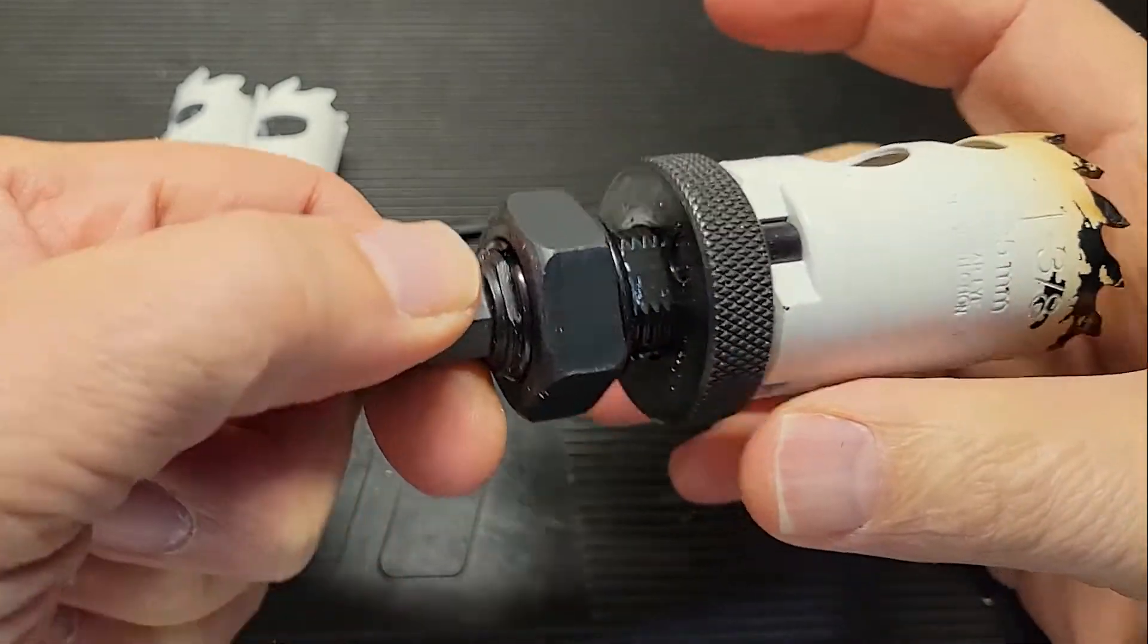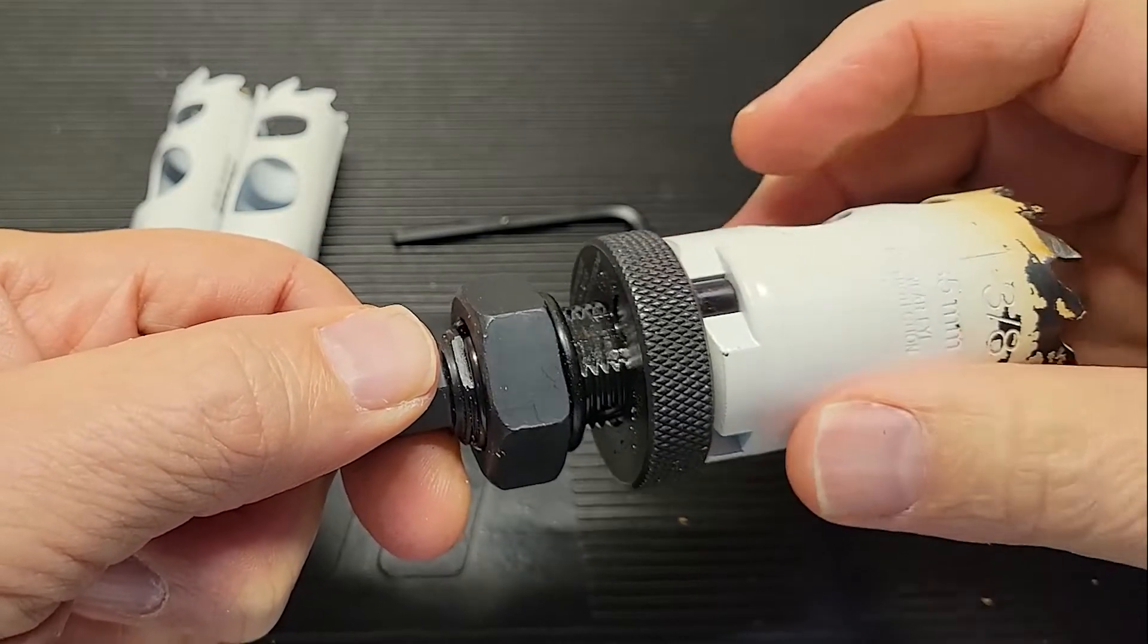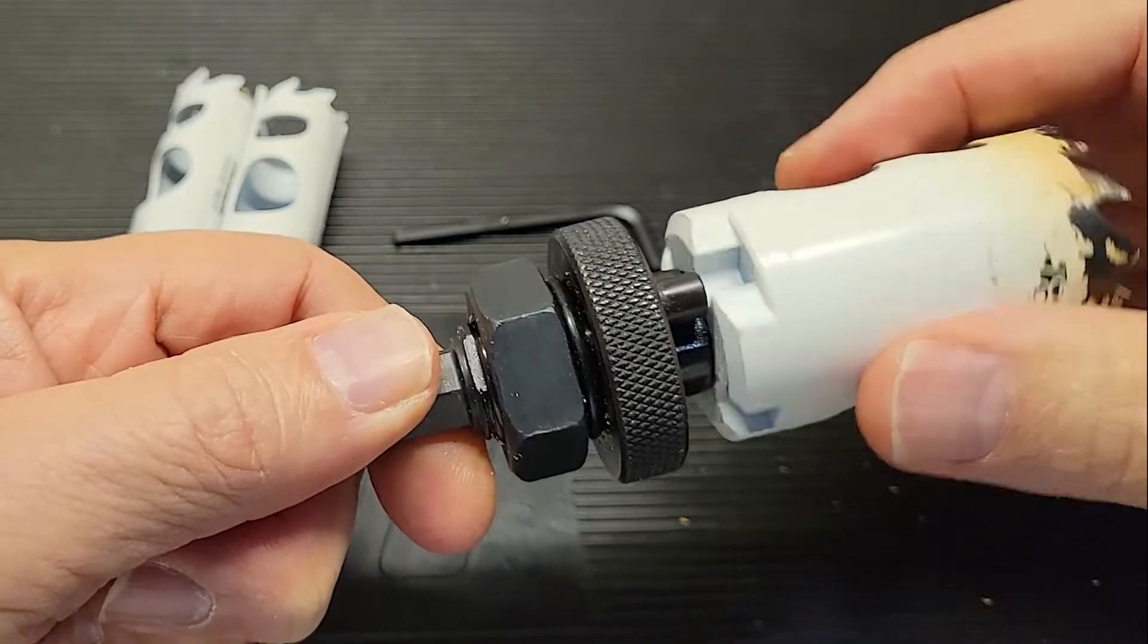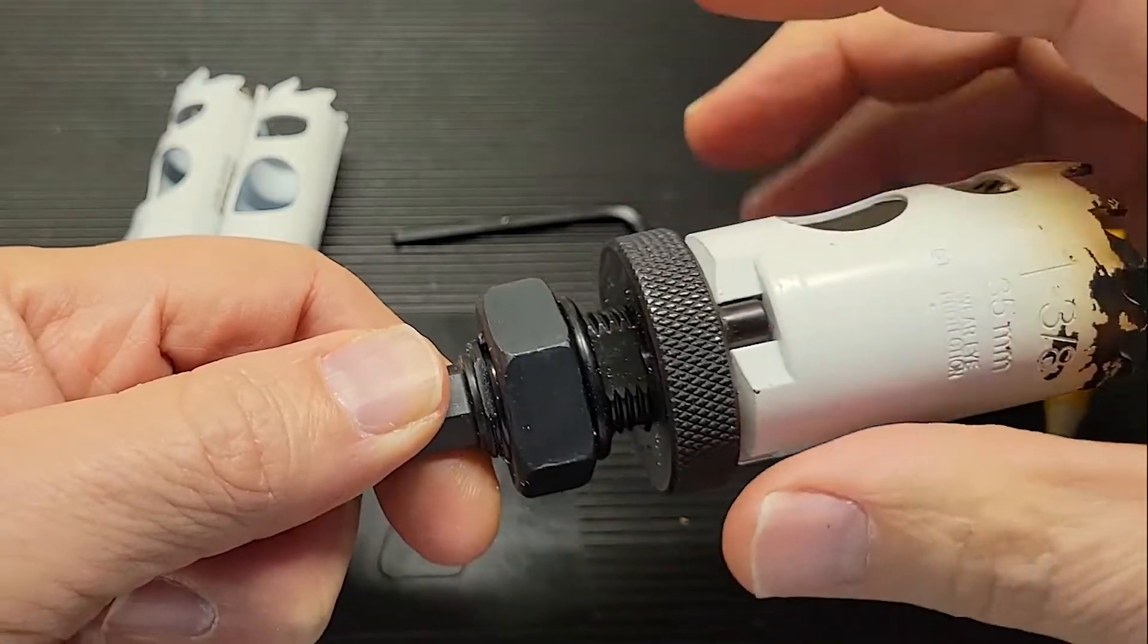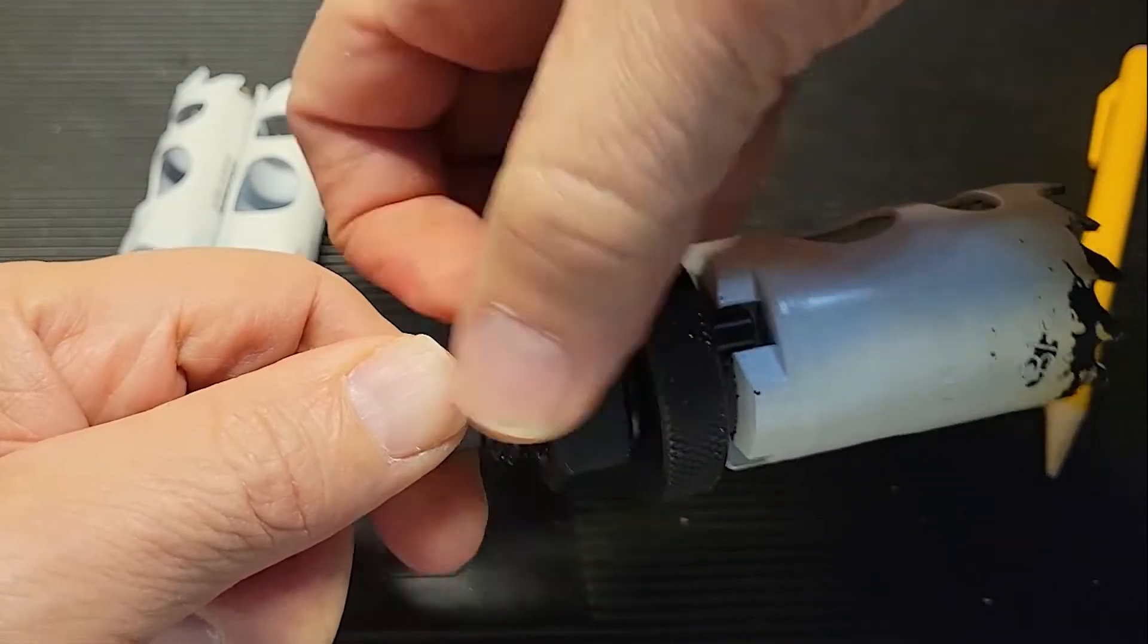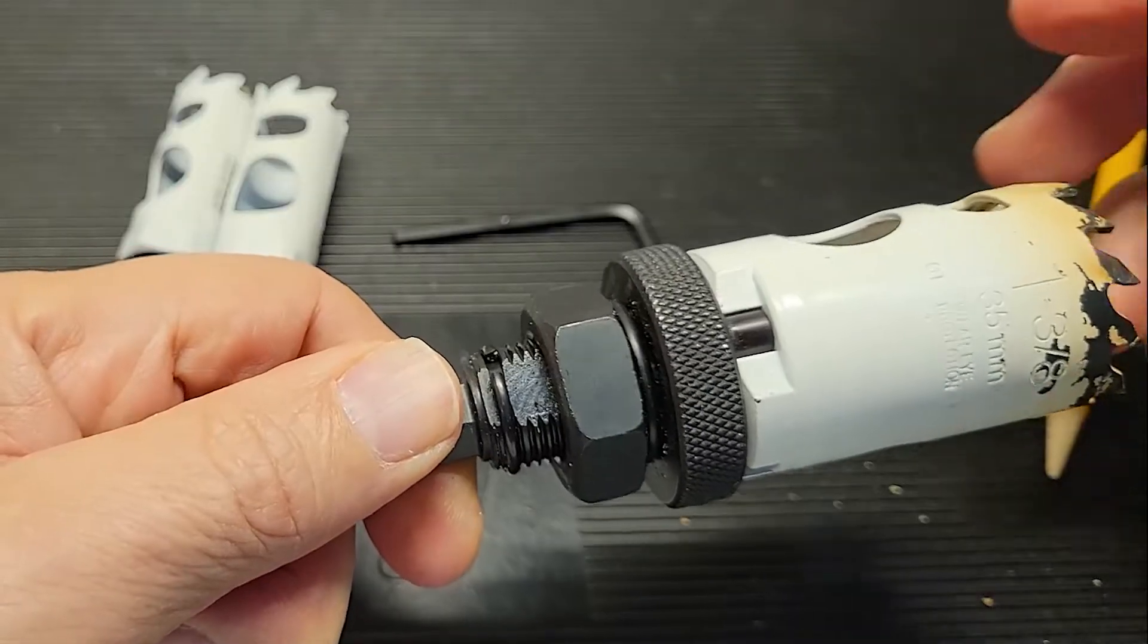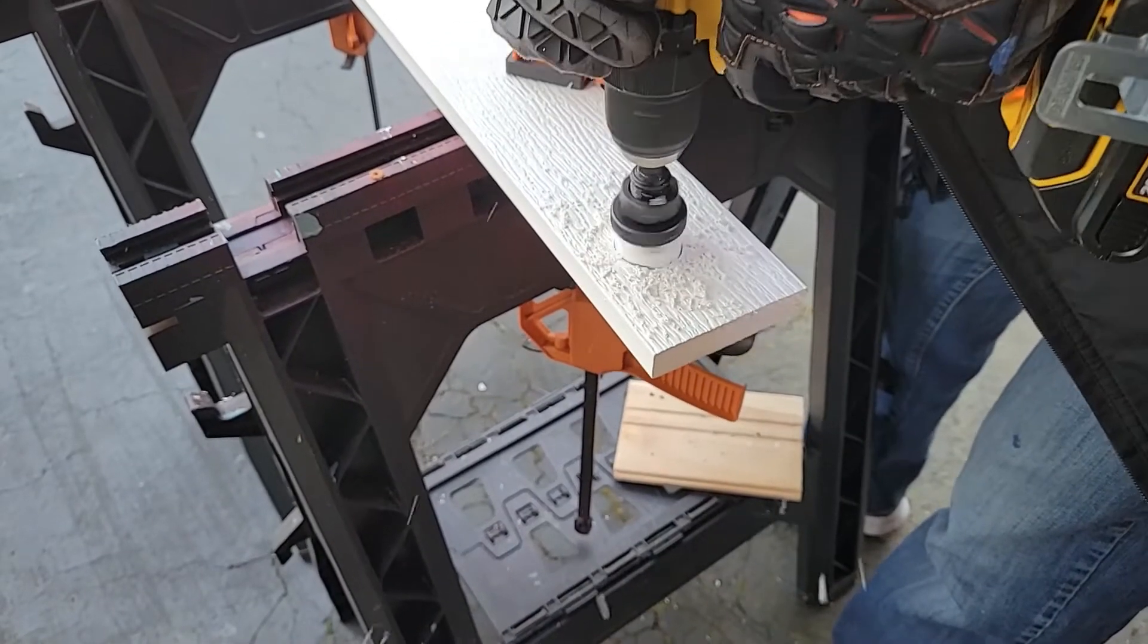So any force that this is taking only gets transferred to here and not to this nut and not to the thread that this hole saw is on. So now we move up the nut. Again, finger tight. Boom, I'm done. I'm ready to use this hole saw.